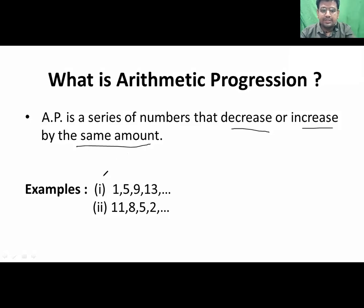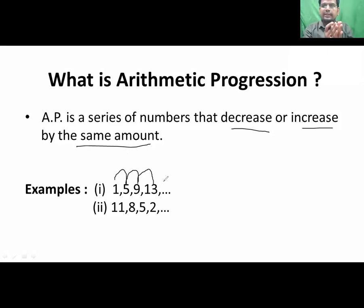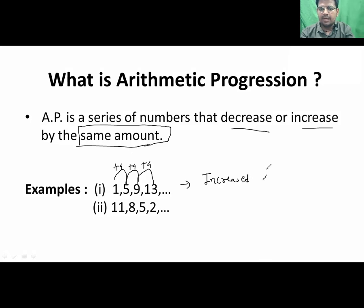The first example series is 1, 5, 9, and 13. The numbers are in increasing order. But not only increasing order is enough to determine whether a series is AP or not — the numbers must increase by the same amount. That word 'same amount' is very, very important. 1 to 5 is increased by 4, then 5 to 9 is again increased by 4, and 9 to 13 is also increased by 4. So the given series is in the form of AP.